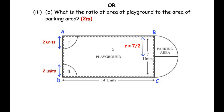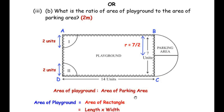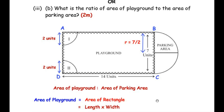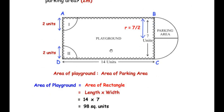Now for the OR question: what is the ratio of the area of the playground to the area of the parking area? We need to find this ratio. The area of the playground is the area of the rectangle, which is length × width = 14 × 7 = 98 square units.